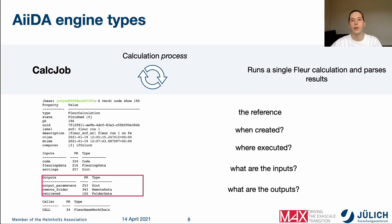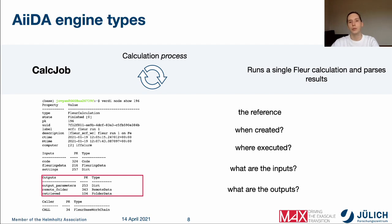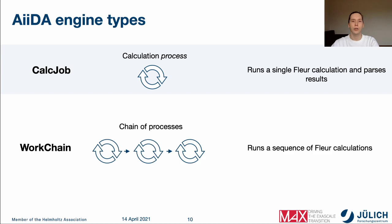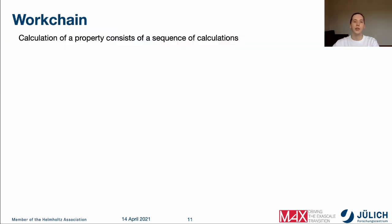However, in real life you won't use a single Floor calculation to perform your project, because there is a better solution — work chains. Work chains can help you to automatize routine tasks or even resolve some technical problems. A work chain represents not a single process but a set or sequence of processes, and you can implement complex logic behind it so that the work chain makes decisions for you.